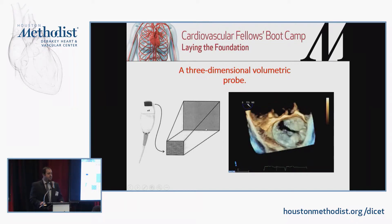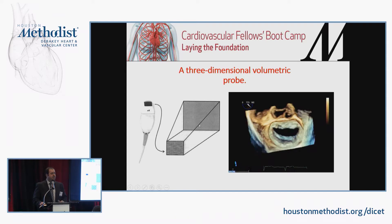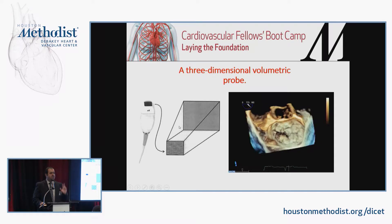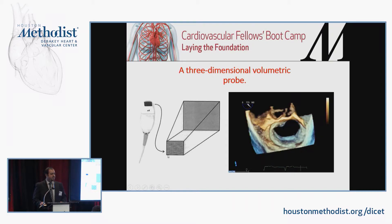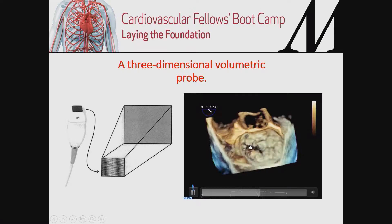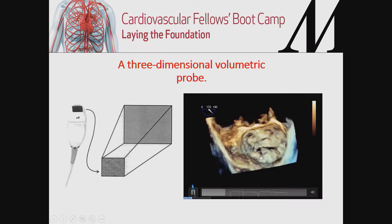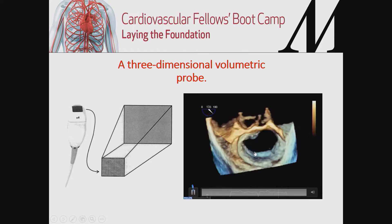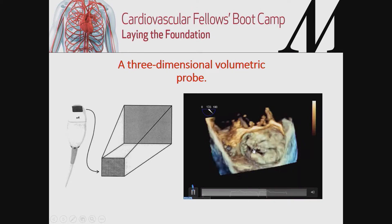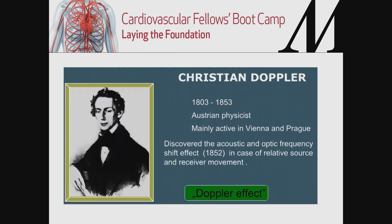Nowadays, ultrasound probes — whether transthoracic or transesophageal echo — have three-dimensional capabilities. Instead of single or two-dimensional scan lines, we're imaging a whole volume of tissue. Think of it like a pyramid — this is a real-time transesophageal echo in 3D of the mitral valve. You can see the anterior leaflet, the posterior leaflet, the aortic valve, and you can clearly identify a flail leaflet in the posterior mitral valve. You now have more in-depth knowledge because you have the whole volume being imaged.